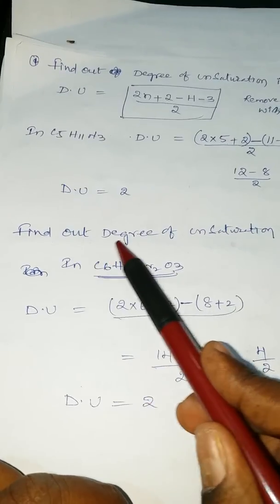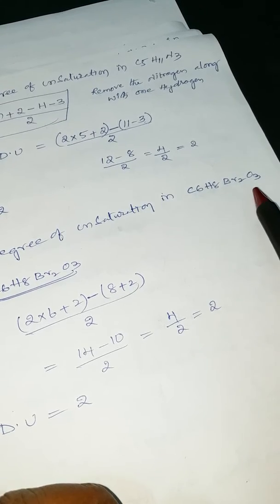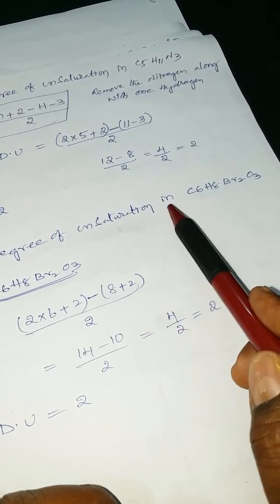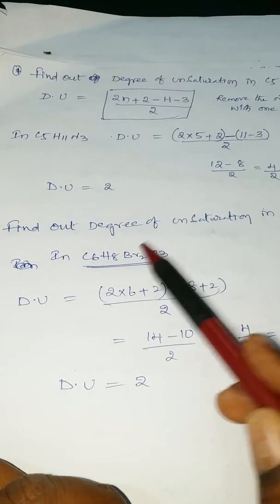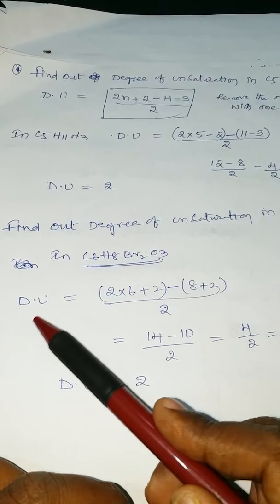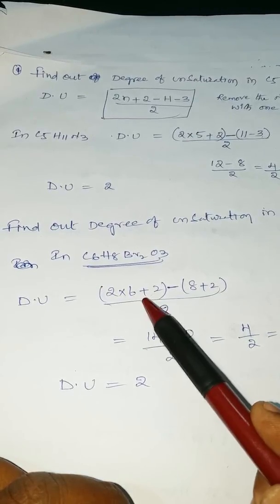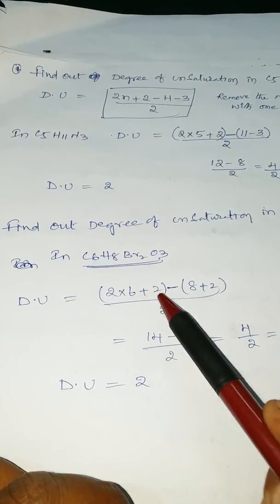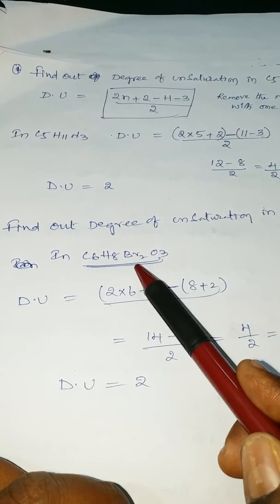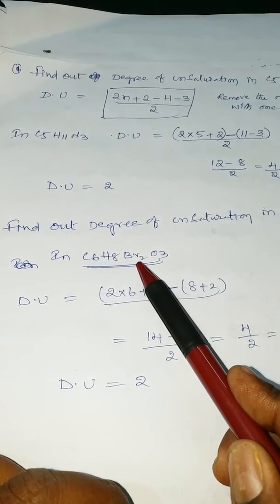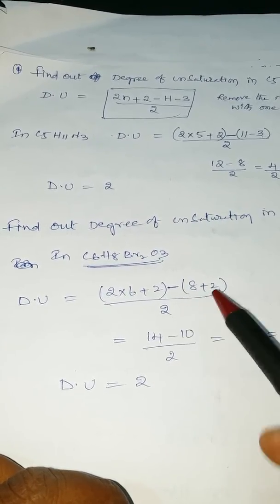Find out the degree of unsaturation in C6H8Br2O3. For C6H8Br2O3, the formula is 2 into number of carbons 6, plus 2, minus number of hydrogens 8, plus 2. Why? Because if any halogens are present, that means addition of 2 hydrogens.